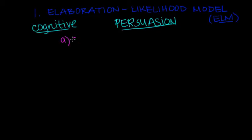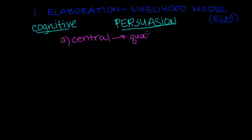The ELM model says the first way it occurs is through a central route. The central route says the degree of attitude change depends on the quality of the argument presented by the persuader — quality is more important. How well does the persuader present the facts? Does it sound really good? Does he seem to know what he's talking about? All of those factors can possibly cause a shift in our attitude.